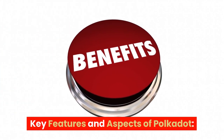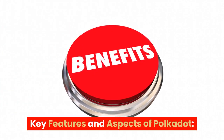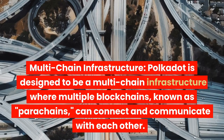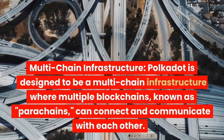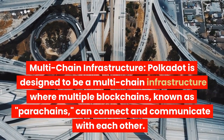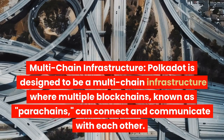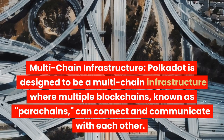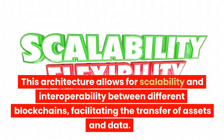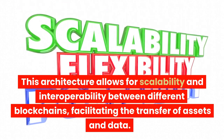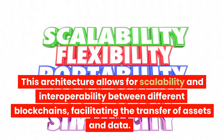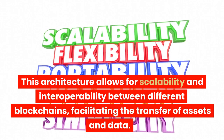Key Features and Aspects of Polkadot: Multi-chain Infrastructure. Polkadot is designed to be a multi-chain infrastructure where multiple blockchains, known as parachains, can connect and communicate with each other. This architecture allows for scalability and interoperability between different blockchains, facilitating the transfer of assets and data.